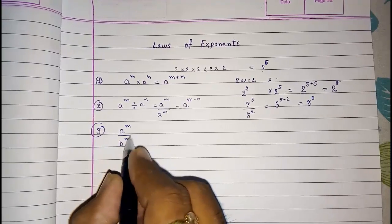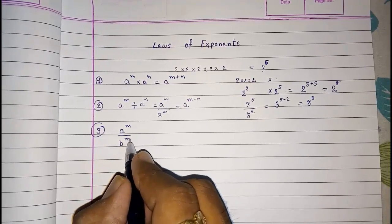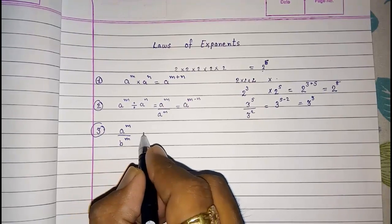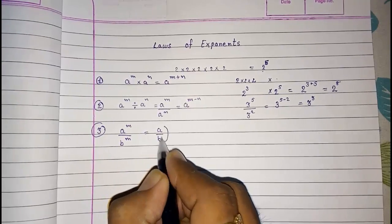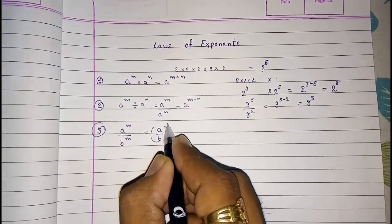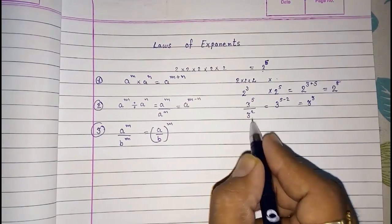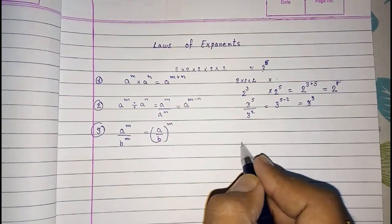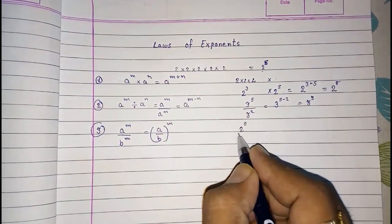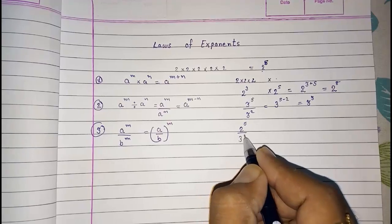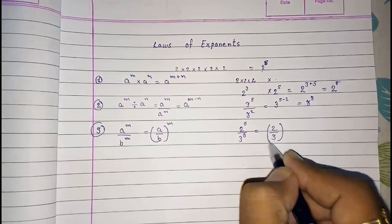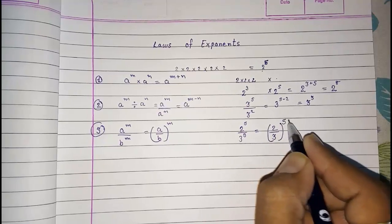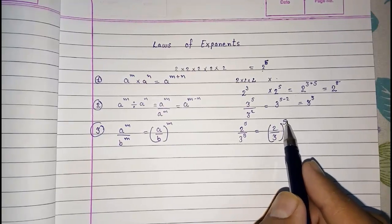The third law: if the numerator and denominator have the same power, a raised to m upon b raised to m, we can directly write it as (a divided by b) whole raised to m. For example, 2 raised to 5 over 3 raised to 5 can be written as (2 divided by 3) whole raised to 5. Vice versa also works — if the power is there, we can distribute it to numerator and denominator separately.